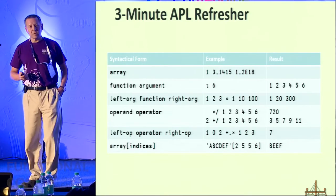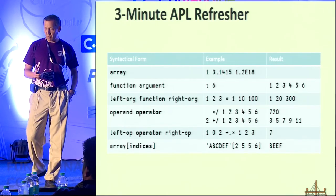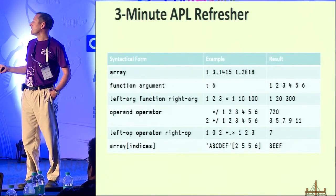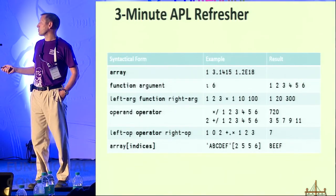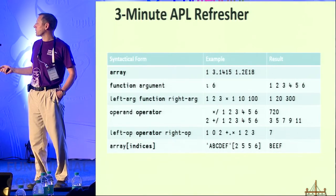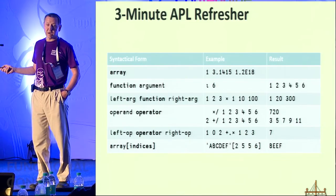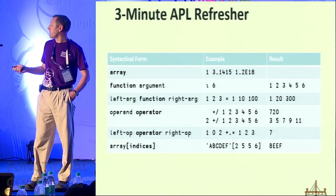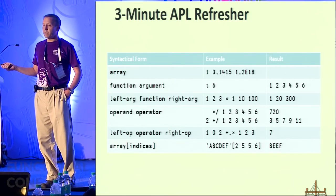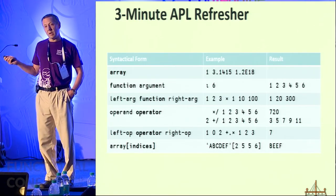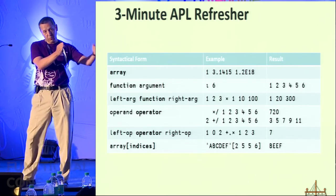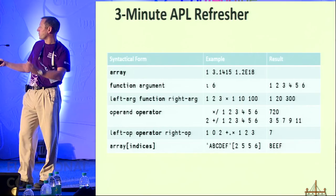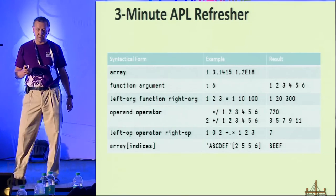Then we have things we call operators that you would normally refer to as higher-order functions. This slash here is an operator which takes the function multiplication as the left operand and produces times-reduction — so this is the product of all those elements. Then reduction with a number on the left gives you a sliding window — so this is the sum with a window size of 2 going through the array.